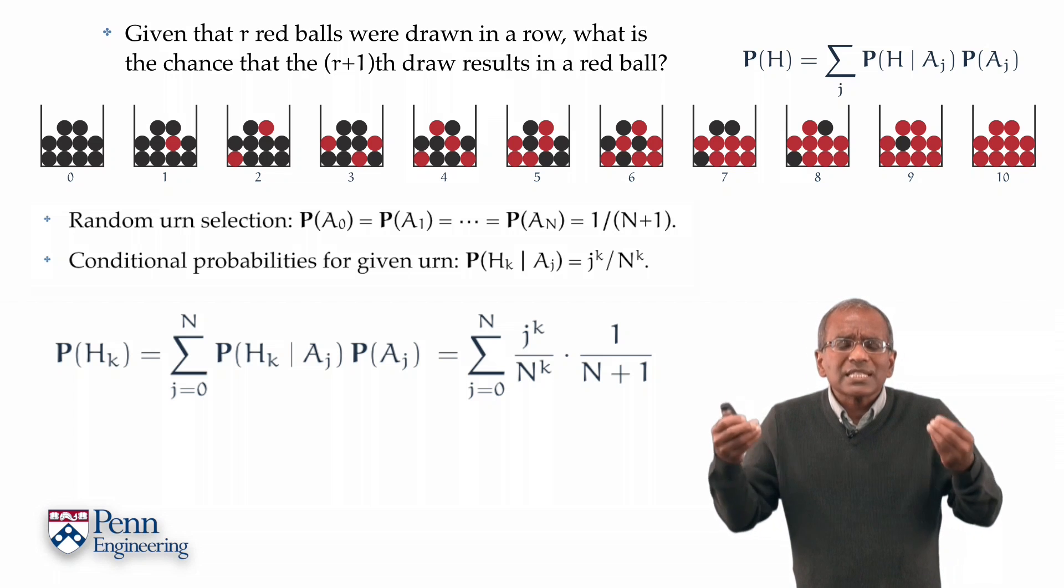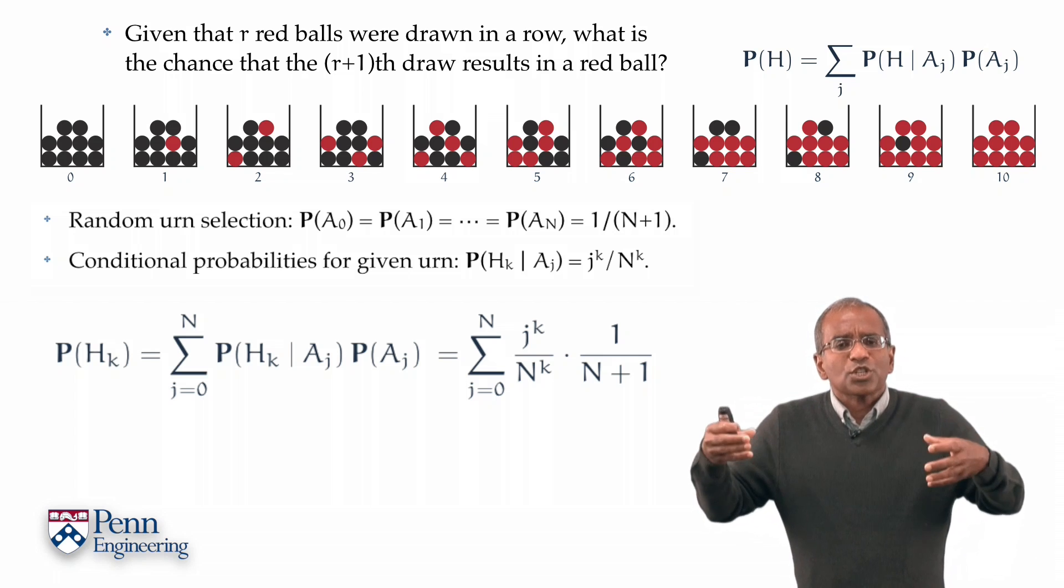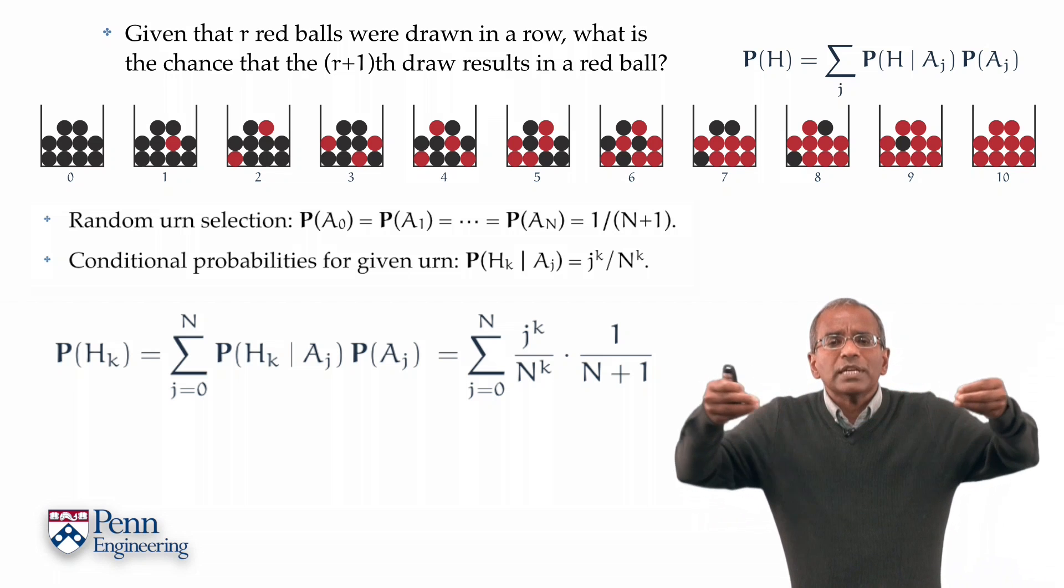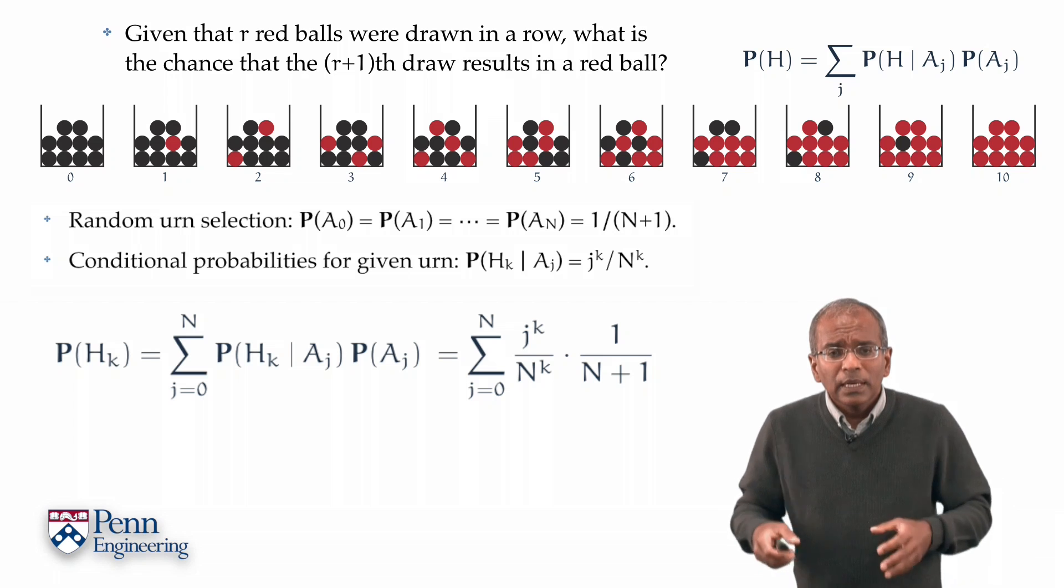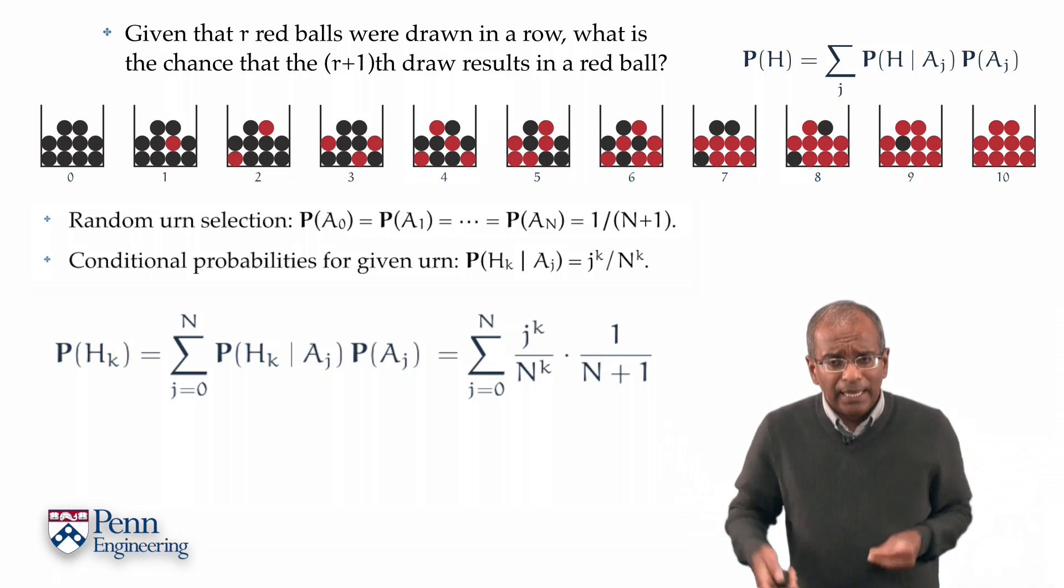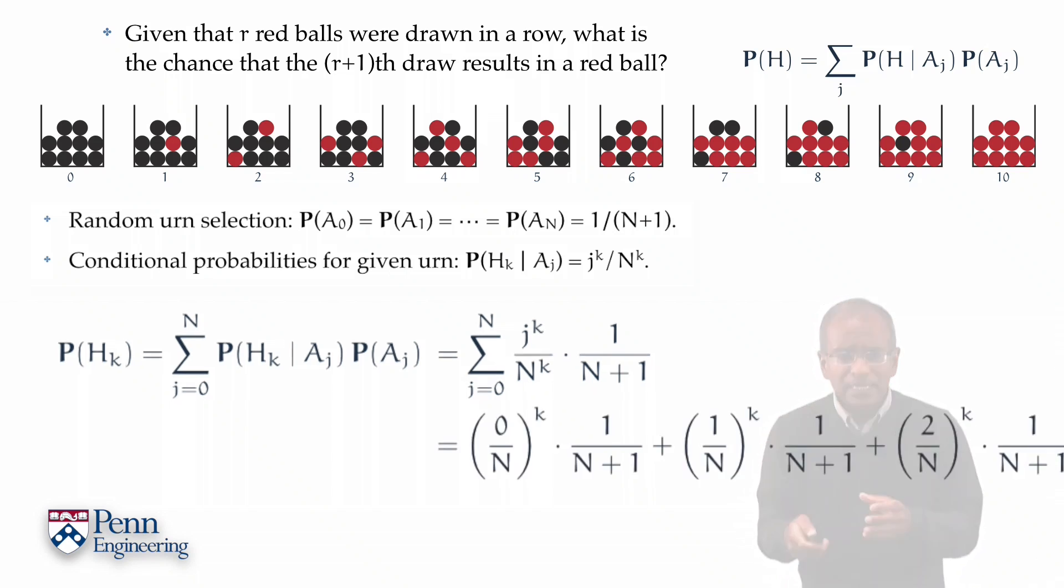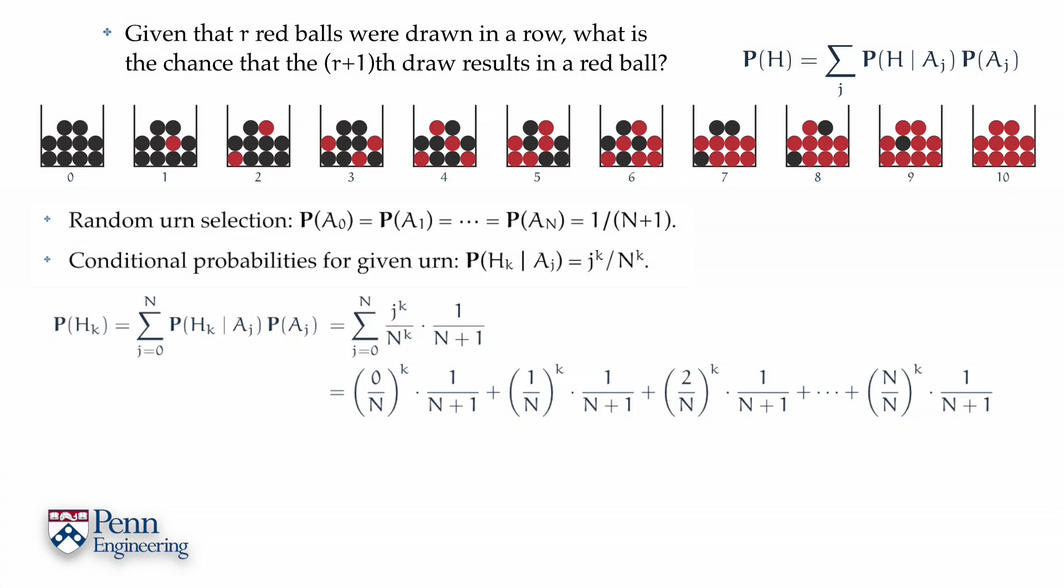In particular, we'd like to say something about what happens to such a sum if the number of possibilities for n's, if the number of balls n, is very large. Let's write this sum out explicitly. The summands are of the form an integer over n to the power k, and they're multiplied by values 1 over n plus 1.